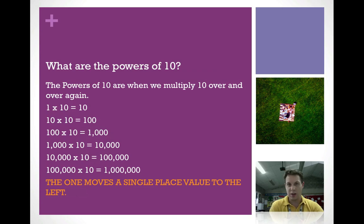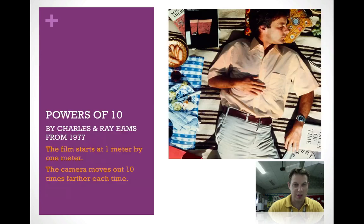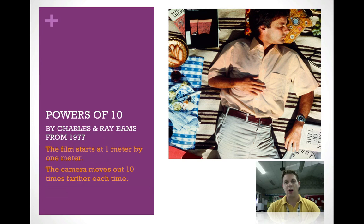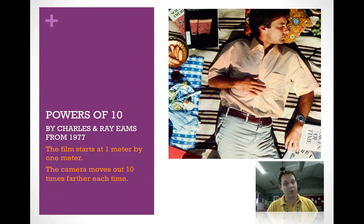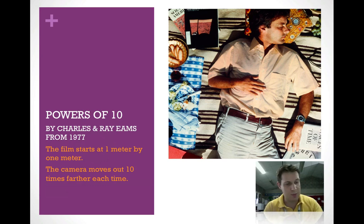It's easy to see with the numbers, but what does that really mean in the real world? One of the best ways to see it: there was a movie produced in 1977 called 'The Powers of 10,' where the camera starts with a one-meter view, and each time we multiply by 10, the picture gets 10 times bigger. To make things shorter, I just took the most important pictures from the movie.